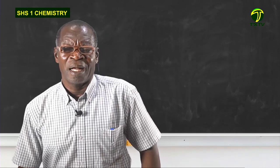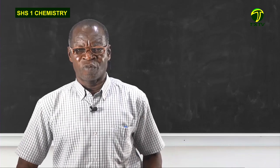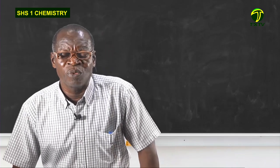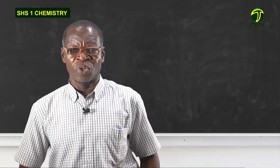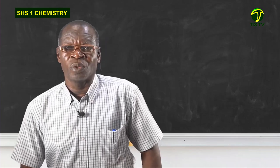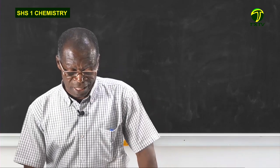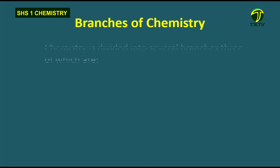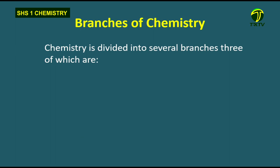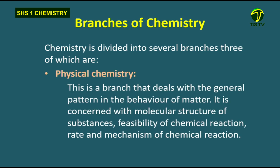The experiment helps us understand the behavior of oxygen, air, and wood — so we know how to obtain ash or charcoal. Chemistry has many branches. At SHS level, we consider three. The first branch is physical chemistry, which deals with the general behavior of substances or matter, concerned with molecular structure, feasibility of chemical reactions, rate of reactions, and mechanism of chemical reactions.